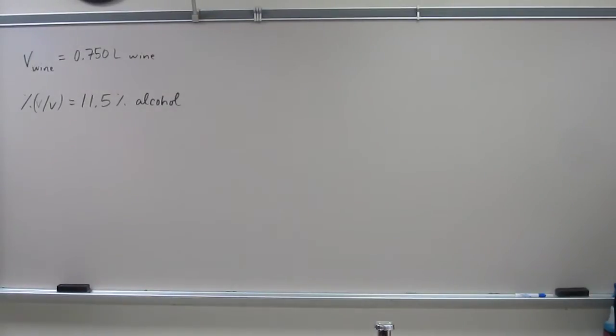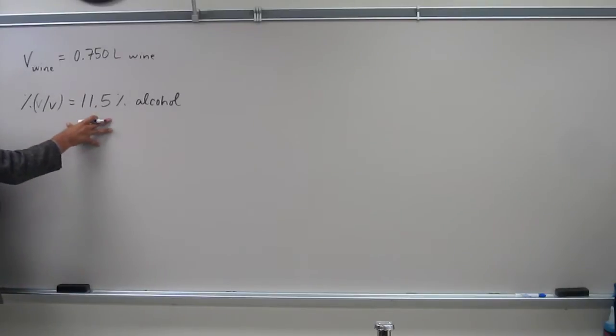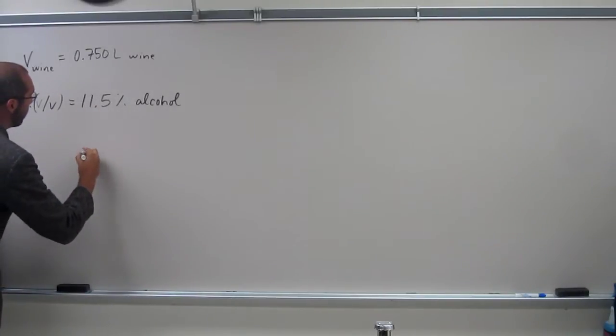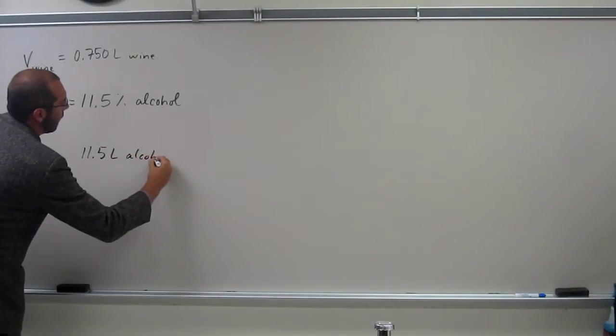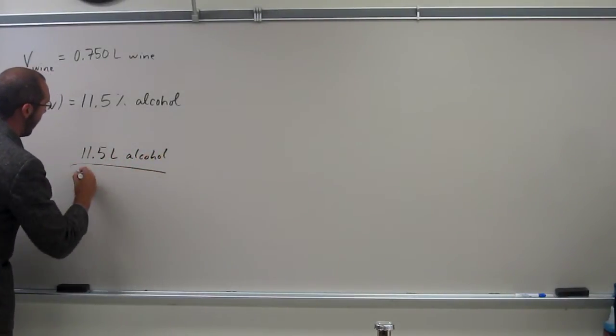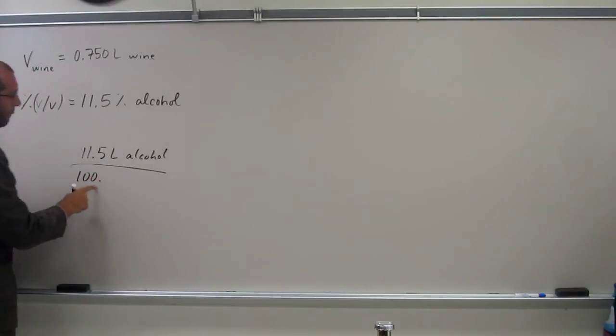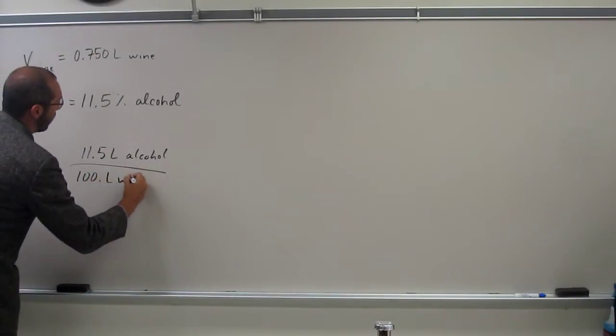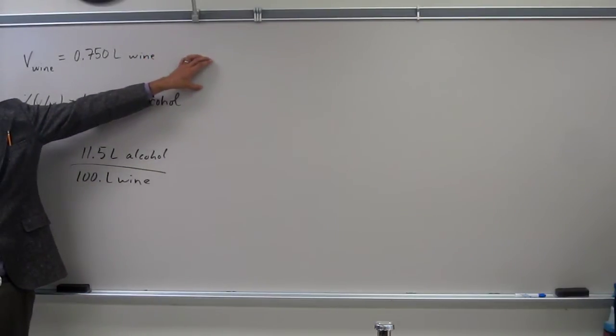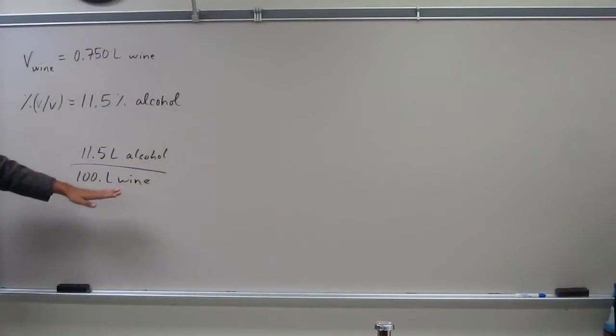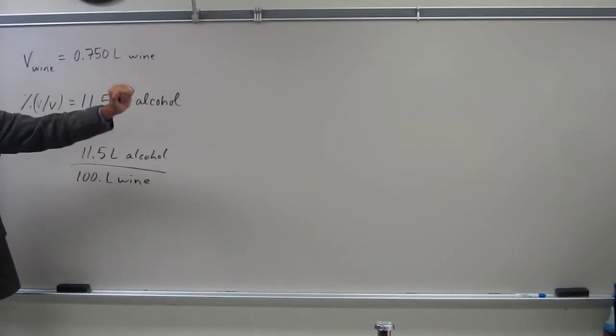So we've got a conversion factor effectively from this here that for every 11.5 liters of alcohol we have, we've got 100 liters of wine. So what we can do is take this conversion factor, plug it up here, cross out or cancel out our liters of wine, the units.